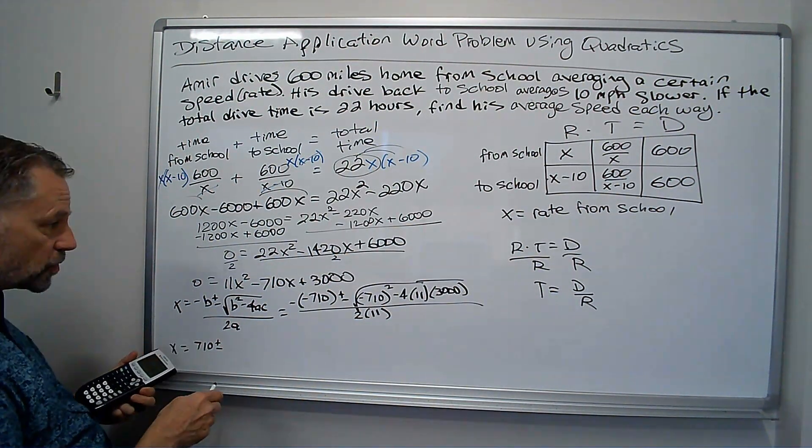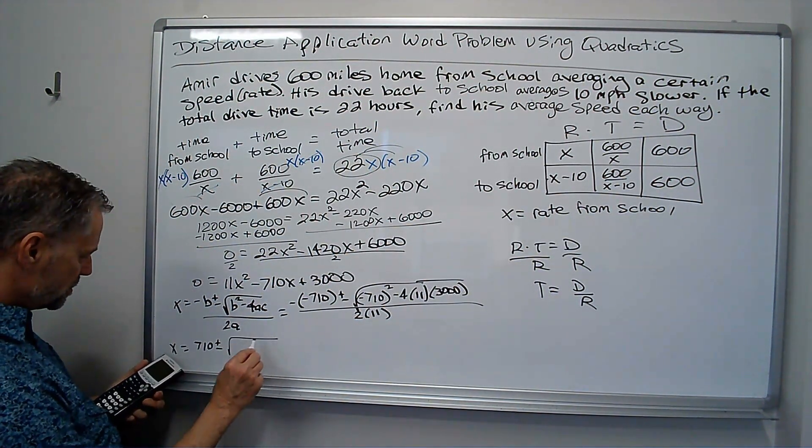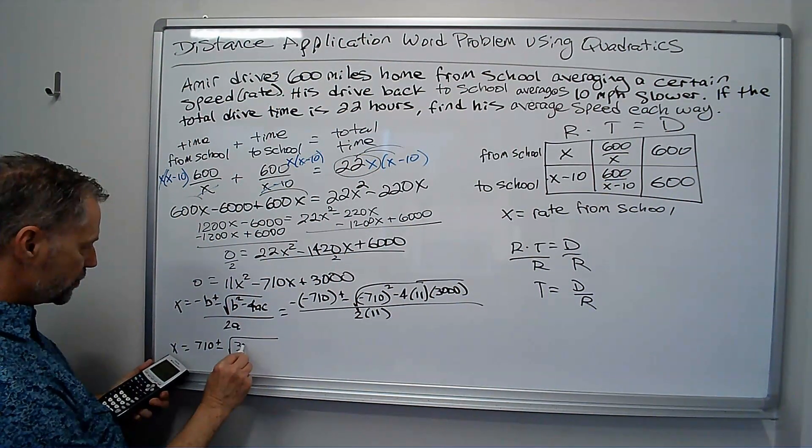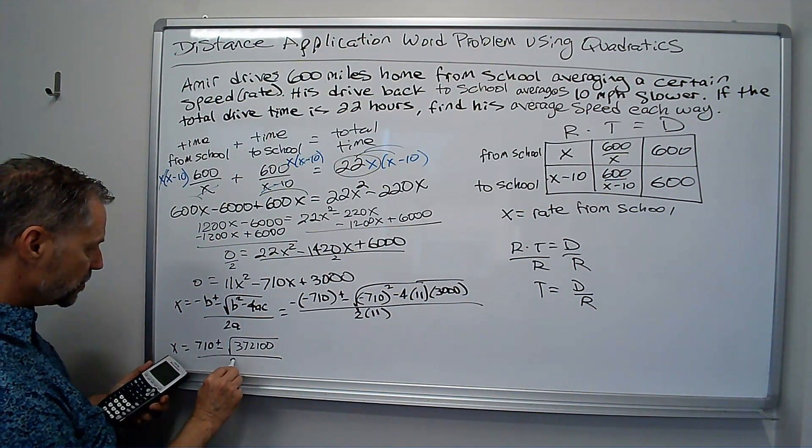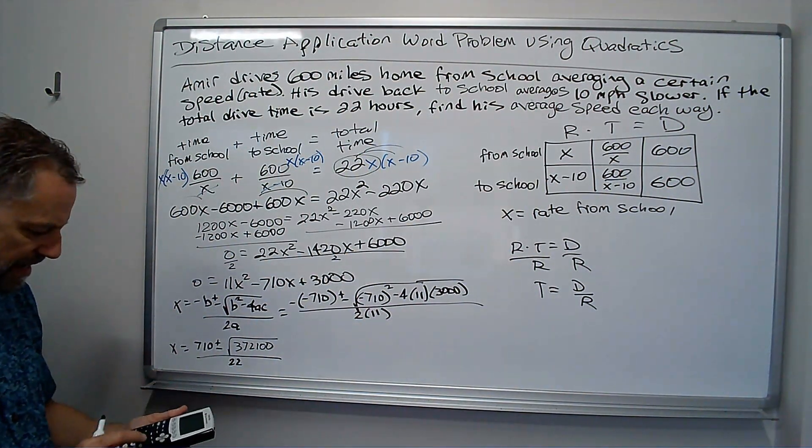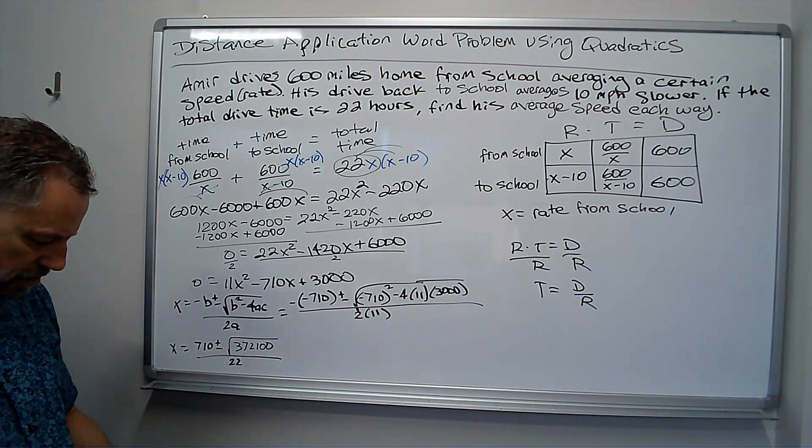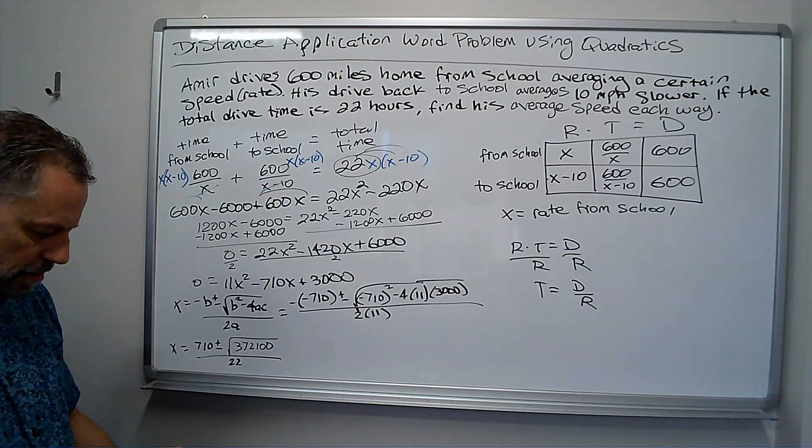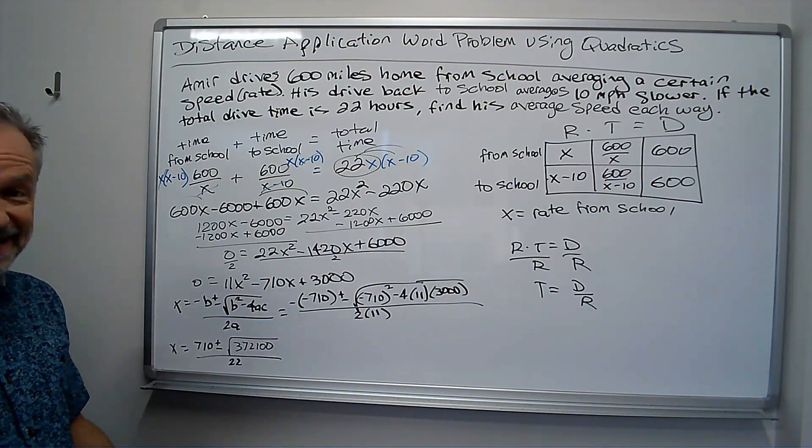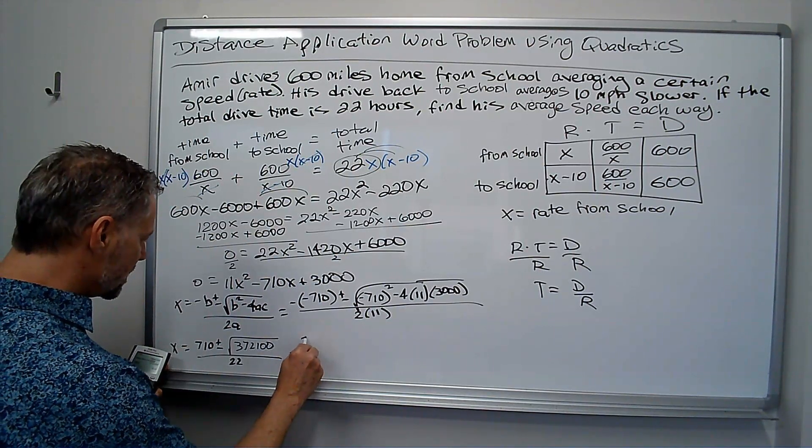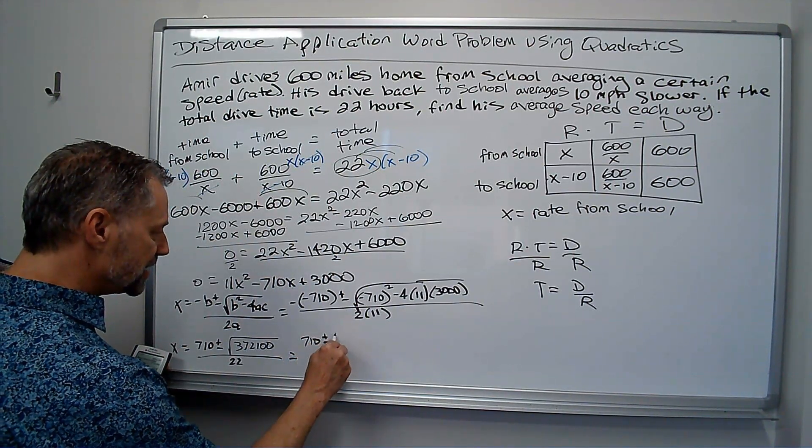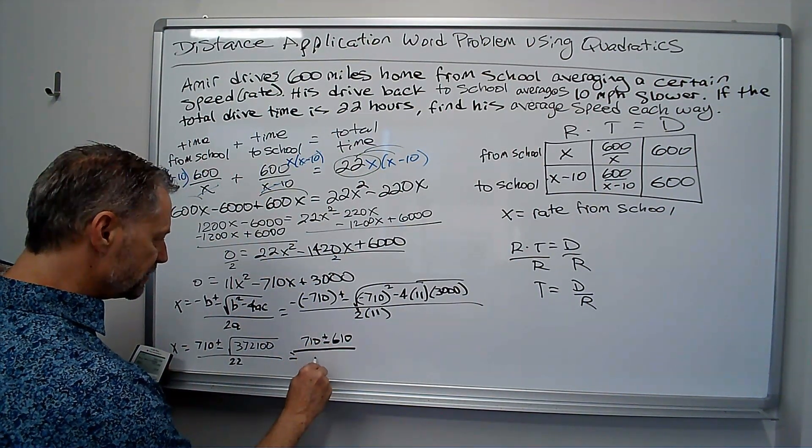Now, I get the square root of 372,100 all divided by 22. That square root is exactly 610.